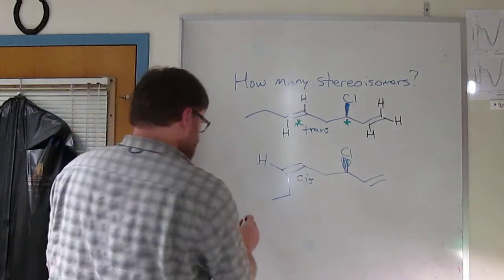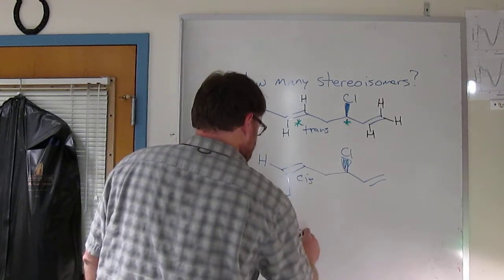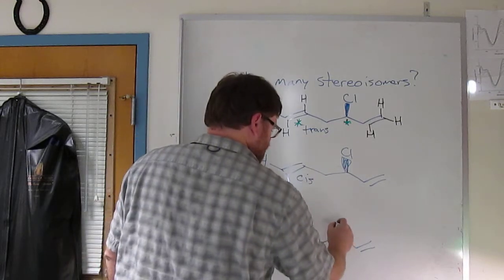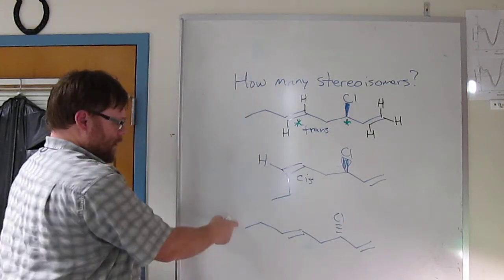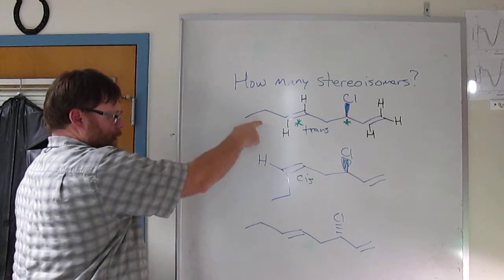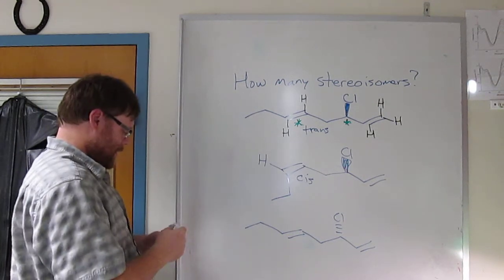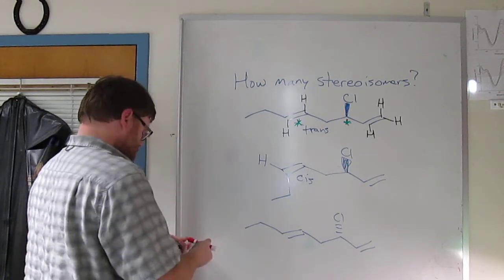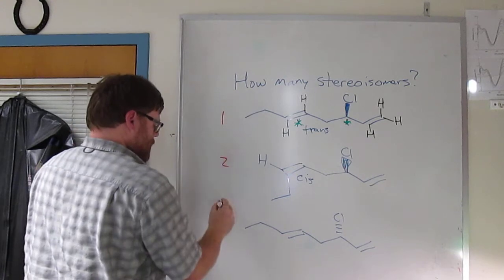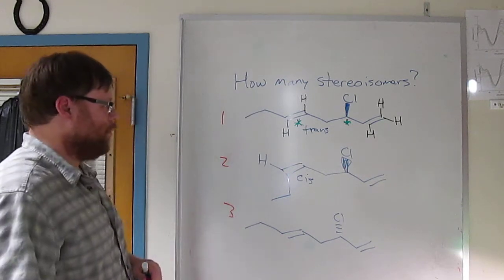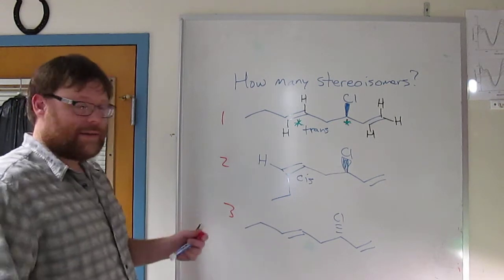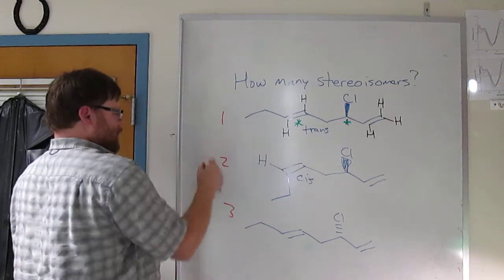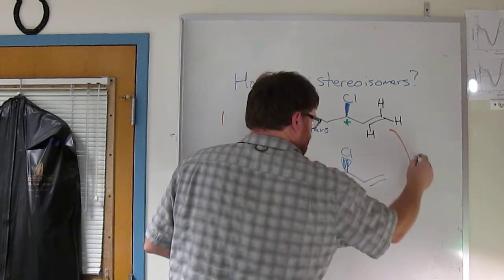So we can take the trans, let's draw the trans again, and invert the chlorine. Alright, so this molecule and this molecule are now what? What is the relationship? I guess we should number these. What's the relationship of molecules one and three? Alright, everything stays the same except the configuration of one chiral center. So one and three are enantiomers.